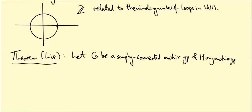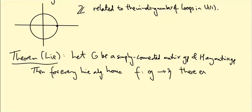And H be any matrix group. And then for every Lie algebra homomorphism, which I should call little f, going from little g to little h, there exists a smooth homomorphism of groups.